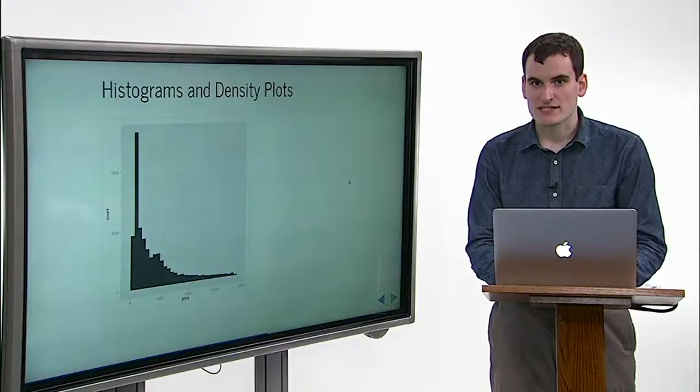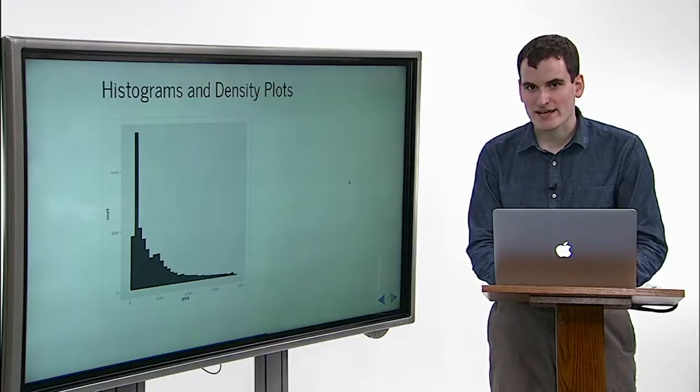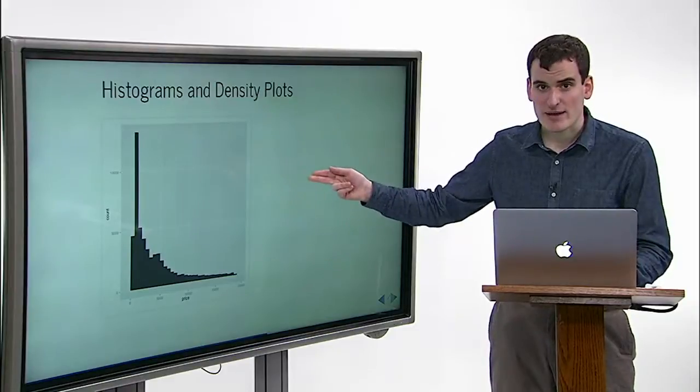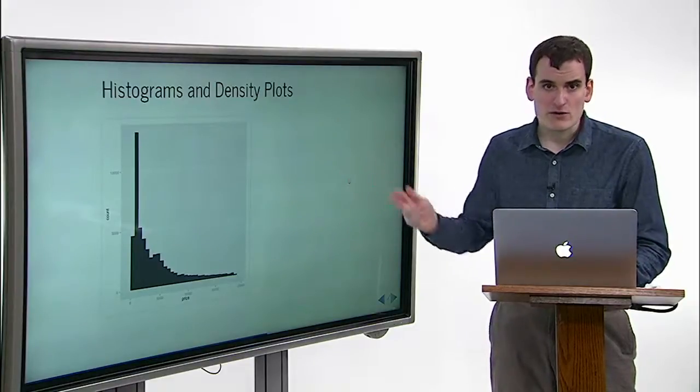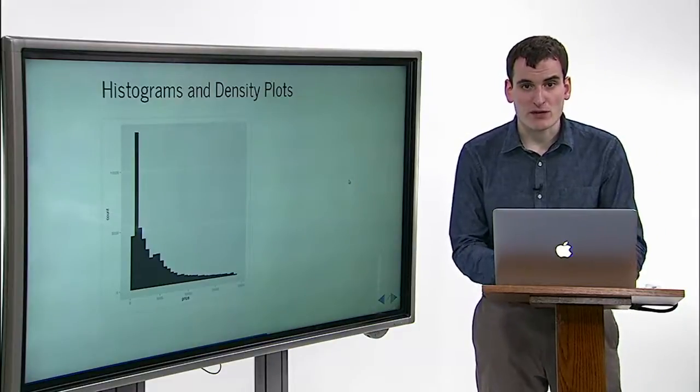We've seen a lot of ways to customize scatter plots, but scatter plots are just one kind of graph. Sometimes we want to look at just one dimension of our data and observe its distribution. So for that, we'll use a histogram.